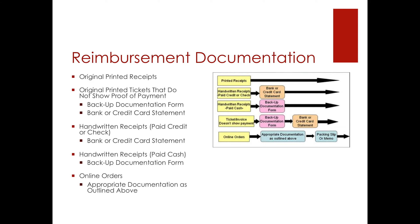When submitting a reimbursement, you need some additional documentation. This includes original printed receipts. If you have original printed receipts that demonstrate method of payment, this will be sufficient. If it does not show the method of payment, it is a ticket. If you have an original printed ticket that does not show your proof of payment, you will additionally need to submit a backup documentation form, which has been approved by your RSO advisor, and a bank or credit card statement.